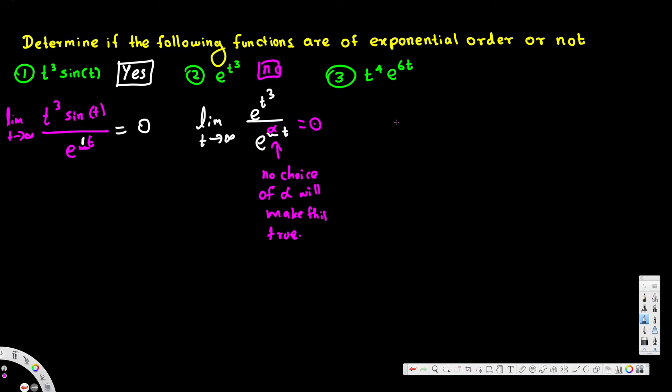Now let's look at this one. Again, we take the limit as t approaches infinity: t to the fourth times e to the 6t divided by e to the power of something times t. Can any number make this zero? For example, if you